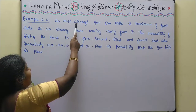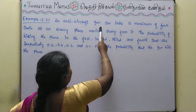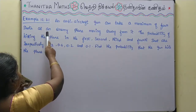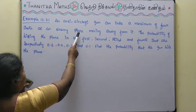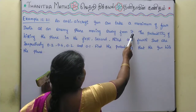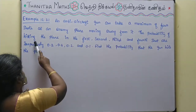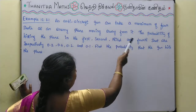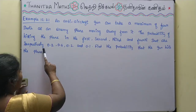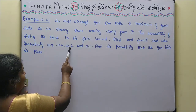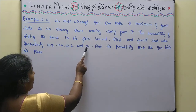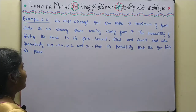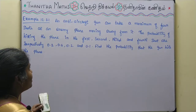An anti-aircraft gun can take a maximum of 4 shots at an enemy plane moving away from it. The probability of hitting the plane on the 1st, 2nd, 3rd and 4th shot are respectively 0.2, 0.4, 0.2, and 0.1. Find the probability that the gun hits the plane.